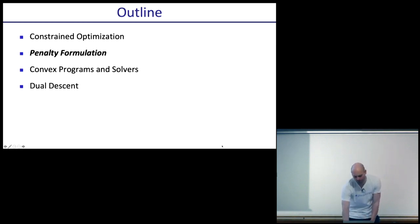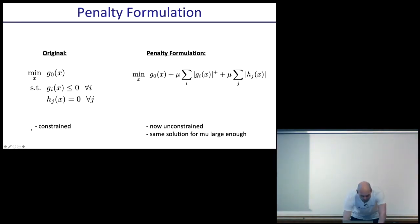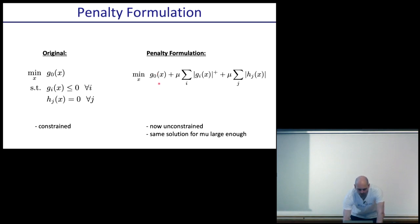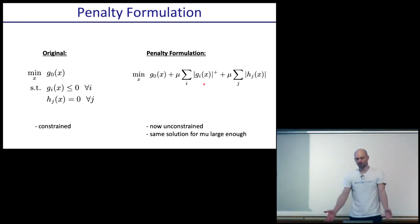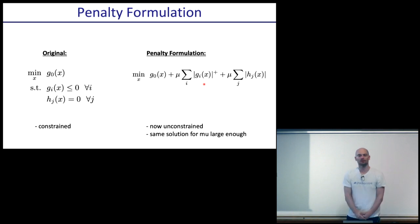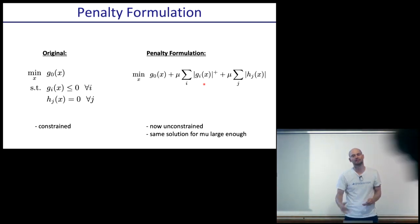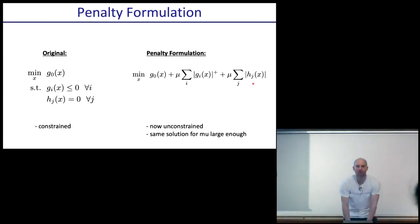The main formulation we saw is the penalty formulation: the original objective plus some coefficient mu times the sum of the constraints. The constraints say the value of g_i of x has to be negative or zero — we sum the positive part. If they're negative, it doesn't contribute to the objective; if it's positive, you get penalized. Same for h_j of x: if it's zero, no contribution; if not, it positively contributes to the objective.